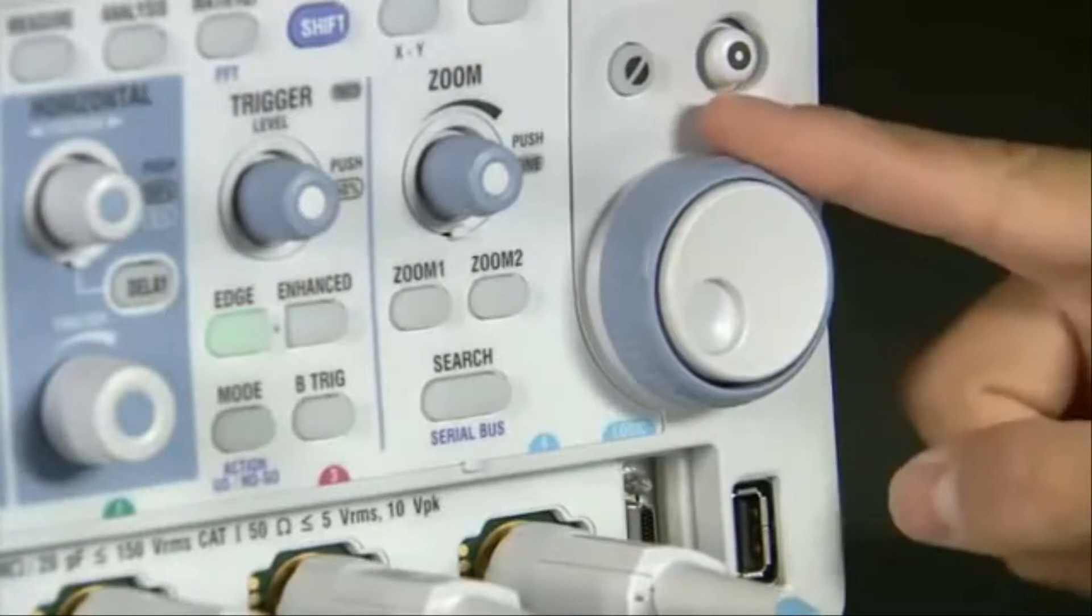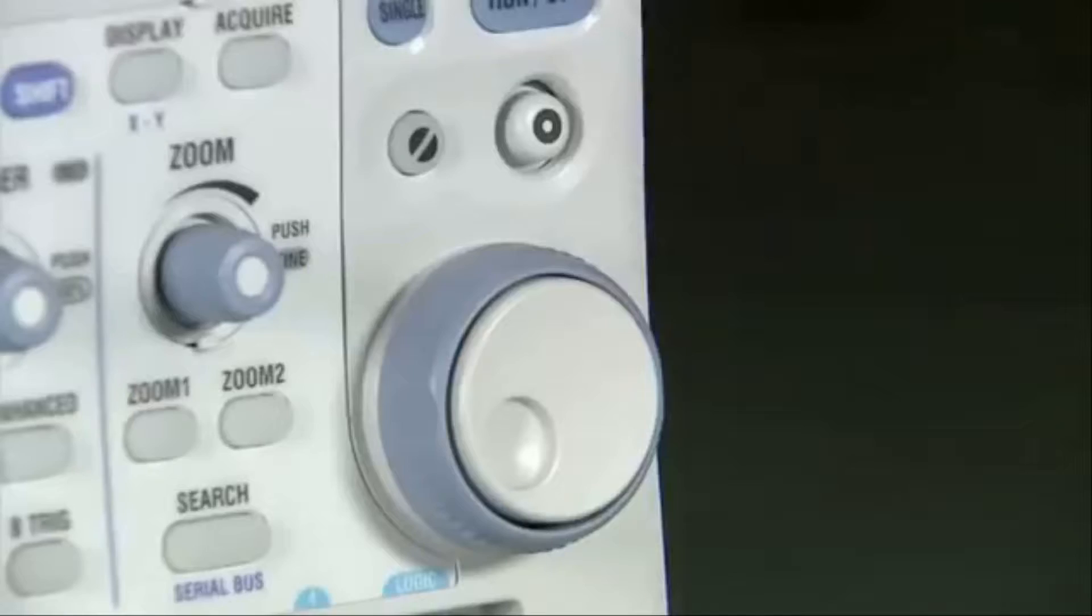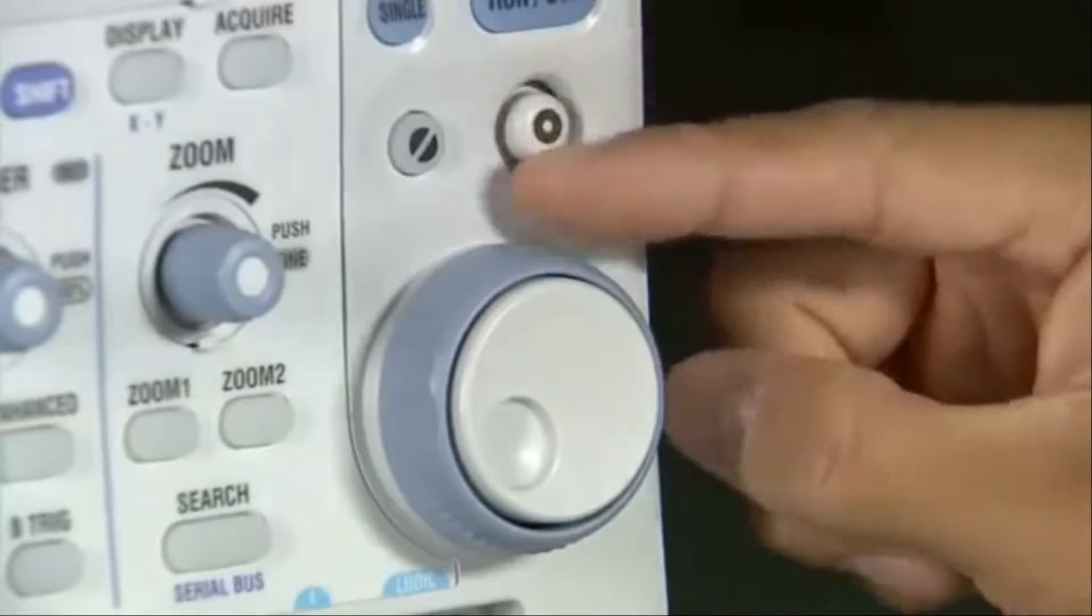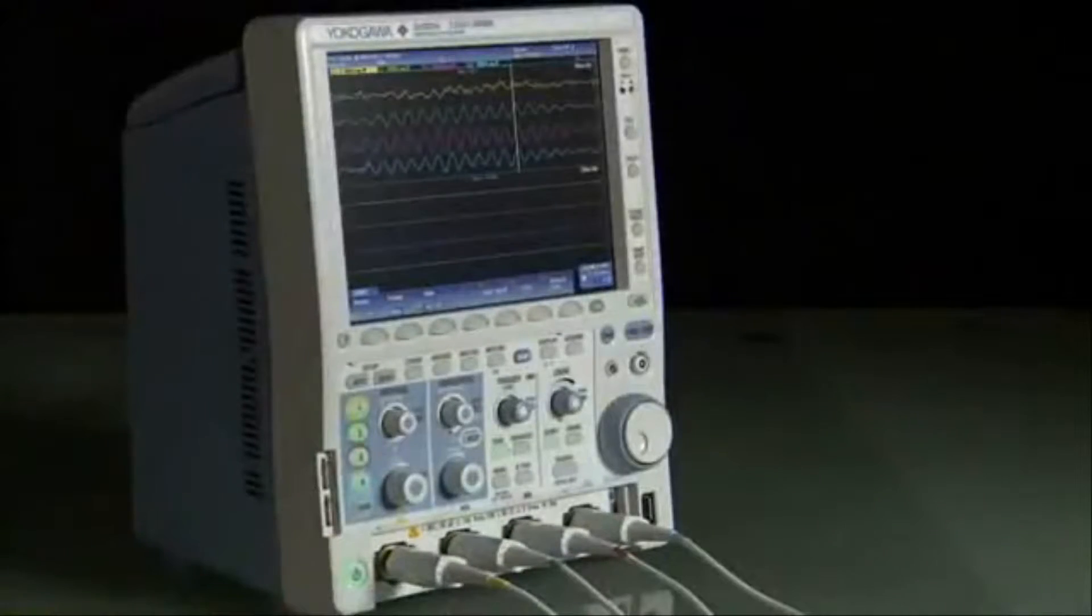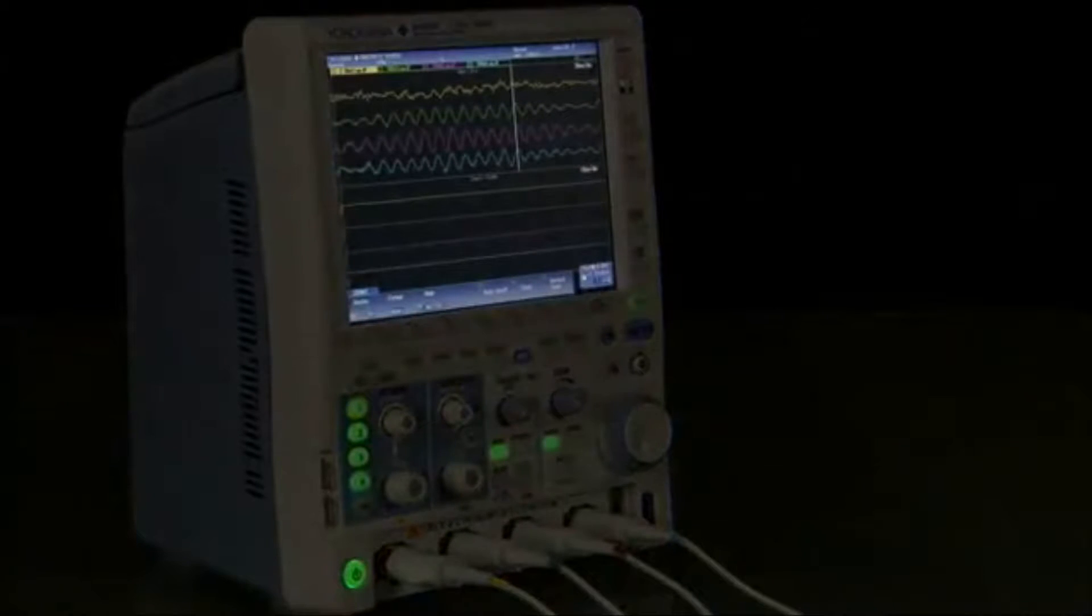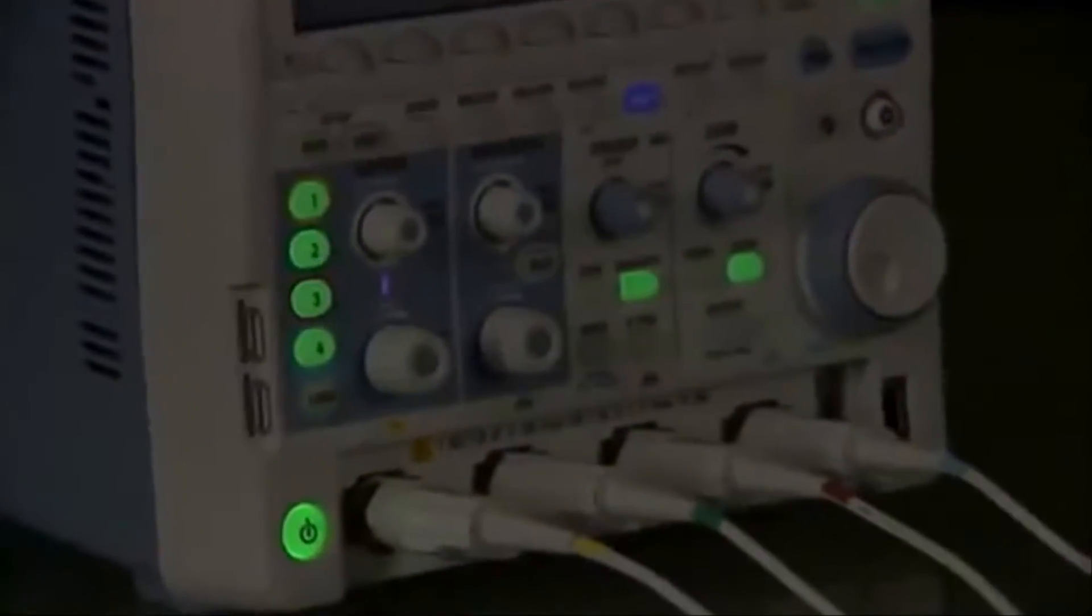Use the intuitive jog shuttle with its spring-loaded outer ring or the new 4-direction selector button to adjust numeric settings. Since important buttons are backlit, you'll always have an intuitive view of which features and channels are toggled on or off.